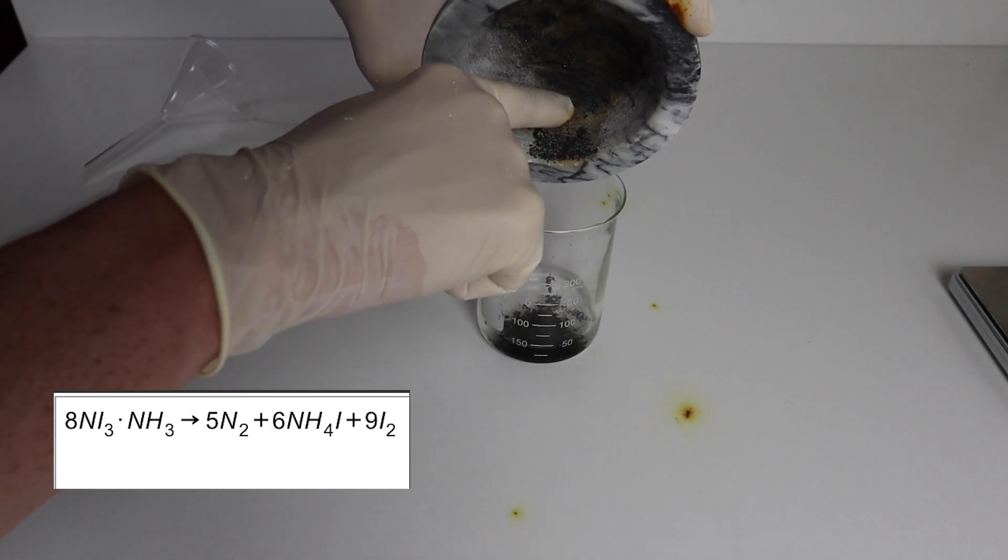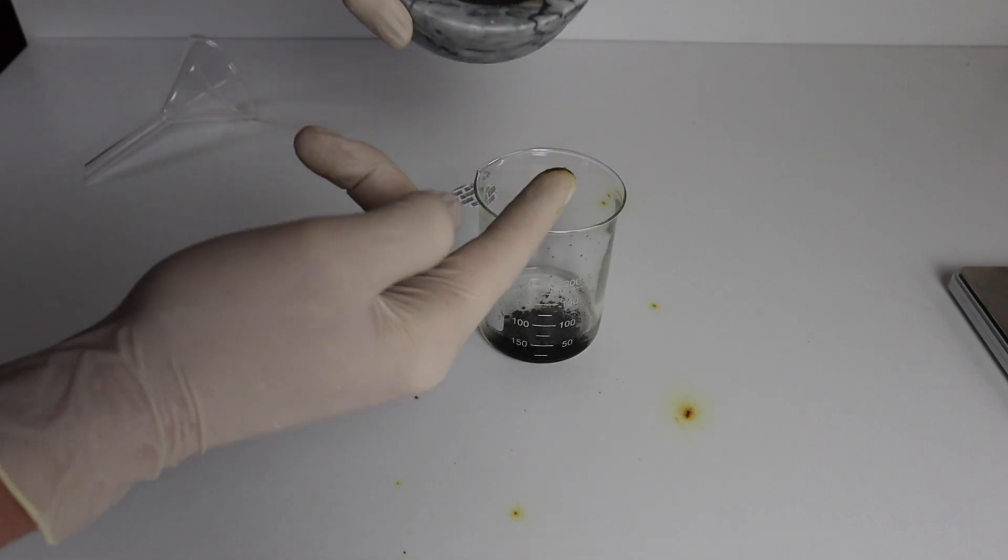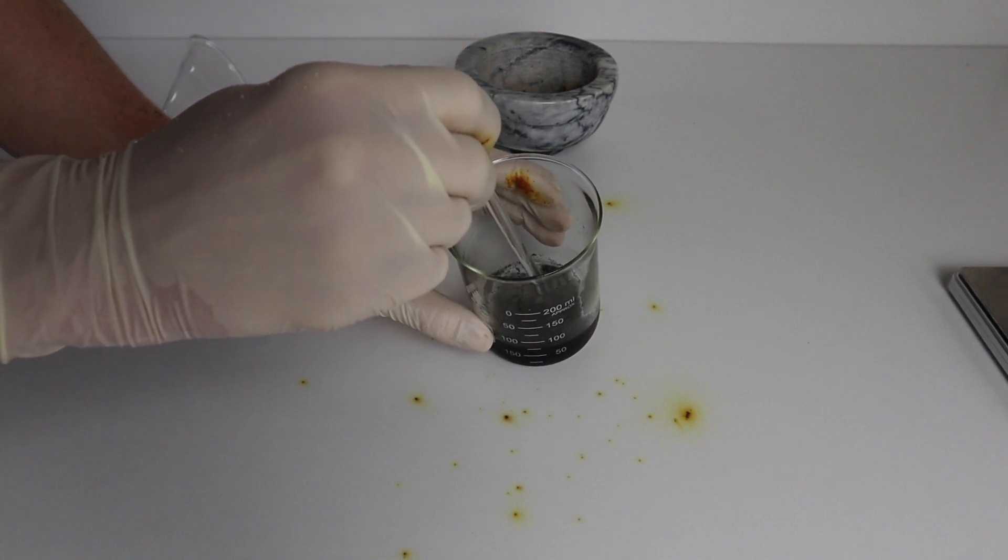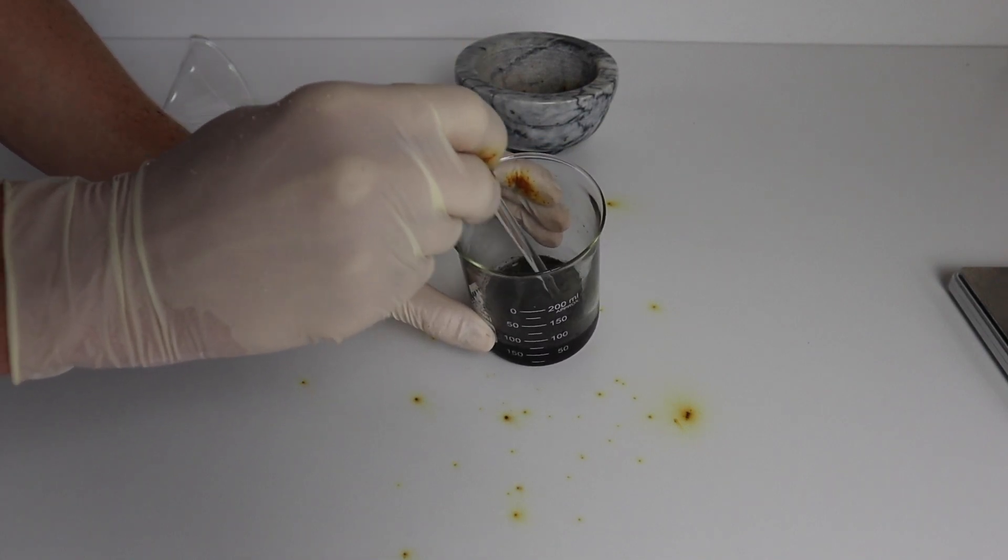When nitrogen triiodide is damp, it is safe to stir and handle. However, once it is dry, the slightest touch will set it off.